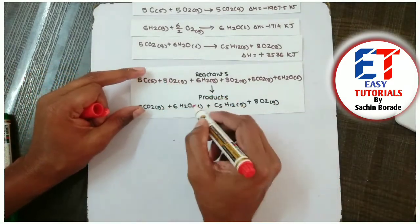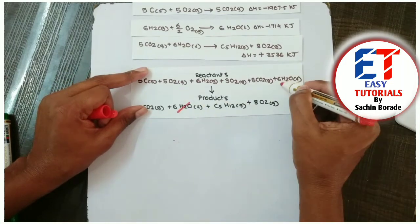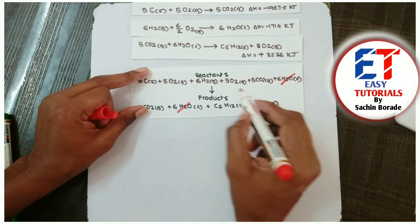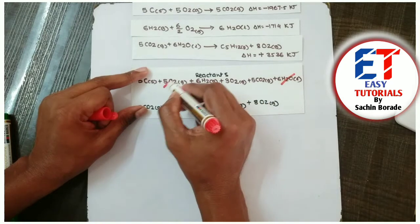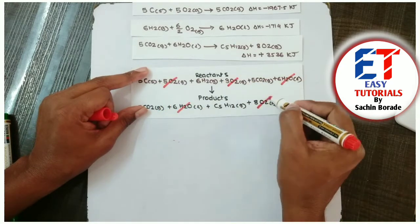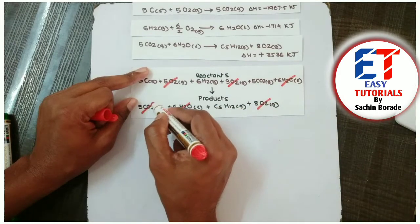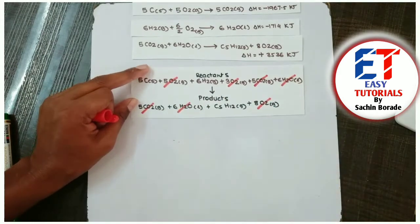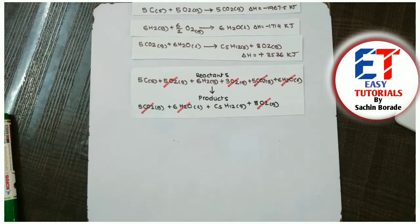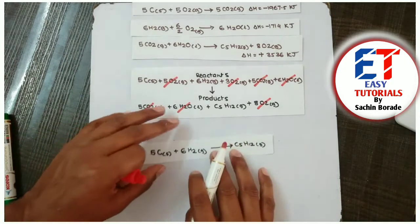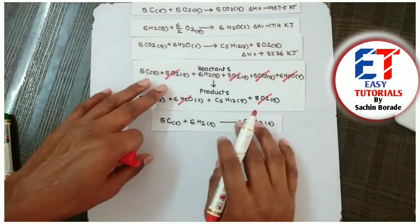So now the cancellation. Here I can see 6SO2. I will cancel it by 6SO2. Here I can see 8O2, 3O2 plus 5O2 equals 8O2. Now what I need to do is 5CO2, 5CO2. Now our final reaction will be like this after cancelling all.